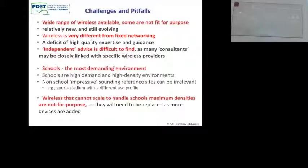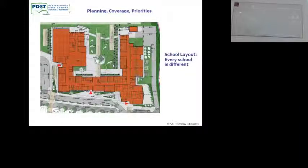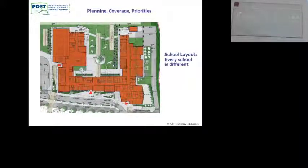If you need more advice, give me a shout. Every school is different — every school layout is different. This is just one example of a pretty new, big school. In terms of planning, coverage, and priorities: a big thousand-pupil school — it might cost 30, 40 or more thousand pounds to put wireless in there. That's the bad news. There are some good solutions out there, but obviously schools don't have that kind of cash lying around.